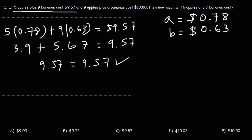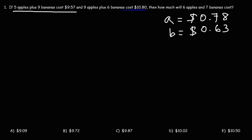Now let's make sure that it works for the second equation. So 9 apples, that's going to be 9 times 78 cents plus 6 bananas, 6 times 63 cents. Let's see if that's equal to $10.80.